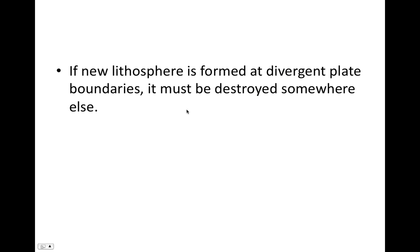If new lithosphere is formed at divergent plate boundaries, that means it must be being destroyed somewhere else. If not, the surface area of Earth would be increasing, which would mean the Earth would have to be expanding in size to accommodate that additional surface area. We know Earth's not expanding, so this creation of oceanic lithosphere at divergent plate boundaries must be compensated for somewhere else.